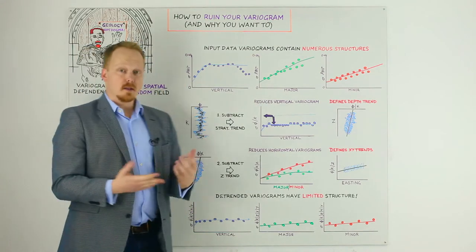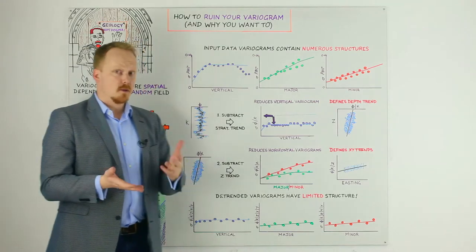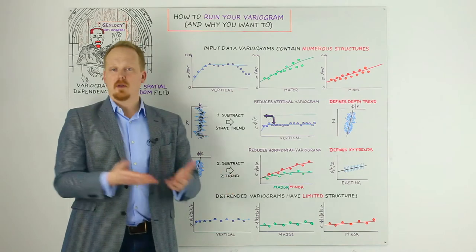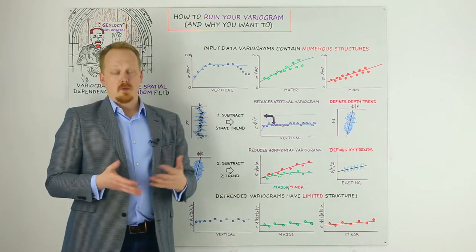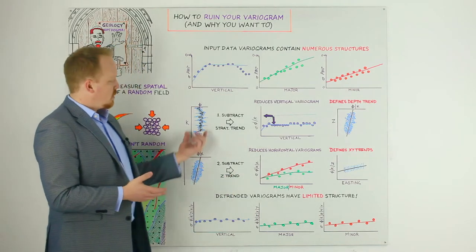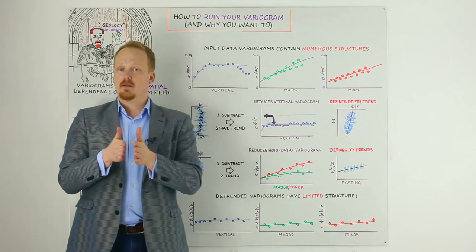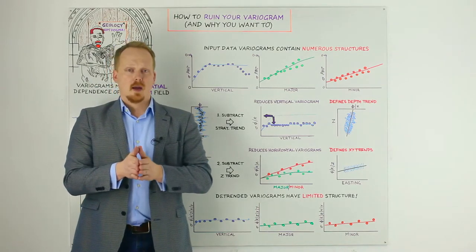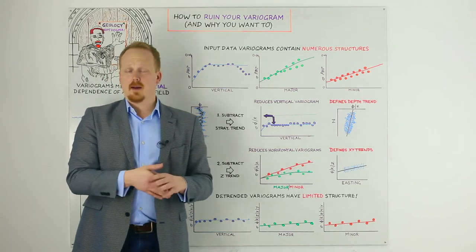One way we could start is by subtracting the stratigraphic trend. This isn't often done, but it's very, very powerful. You could take, for example, a type log and remove that from your log, from your data set, or you could do what I've done here and essentially subtract the midpoint or the mean value from every one of your K layers and see what you get after you take that out.